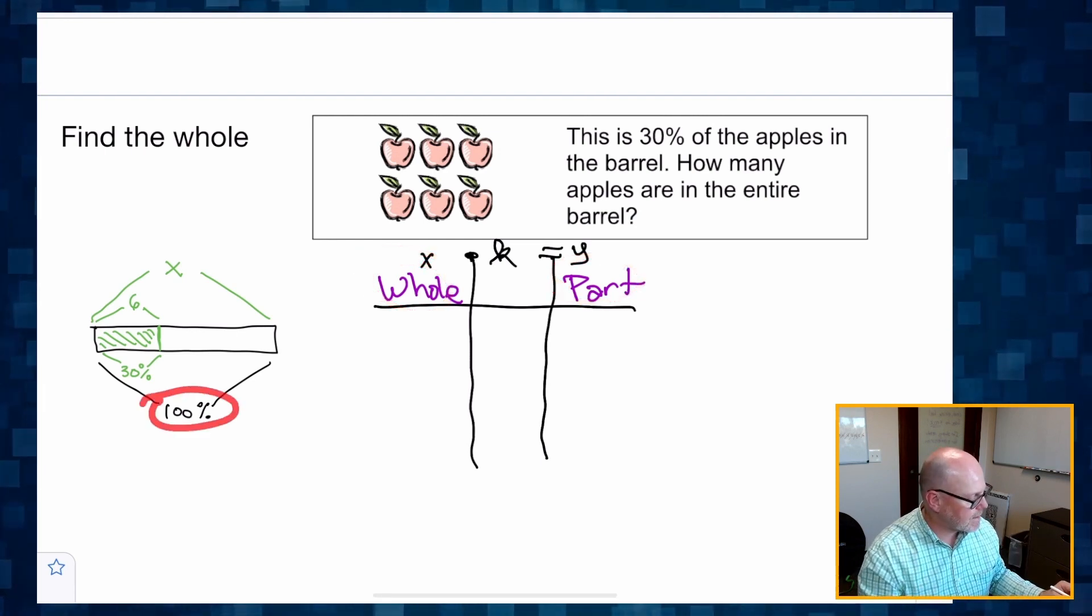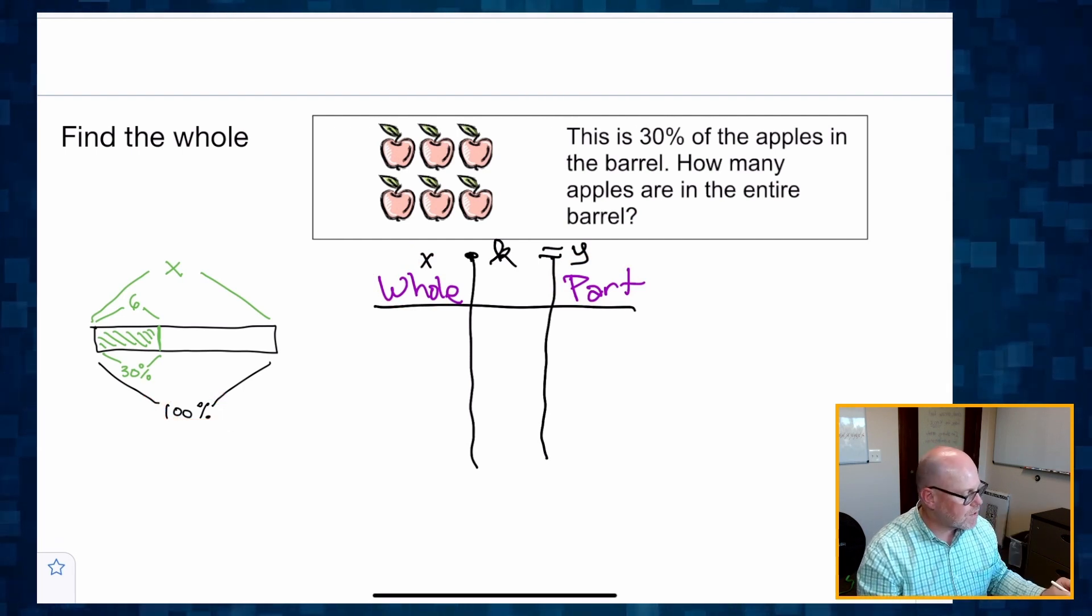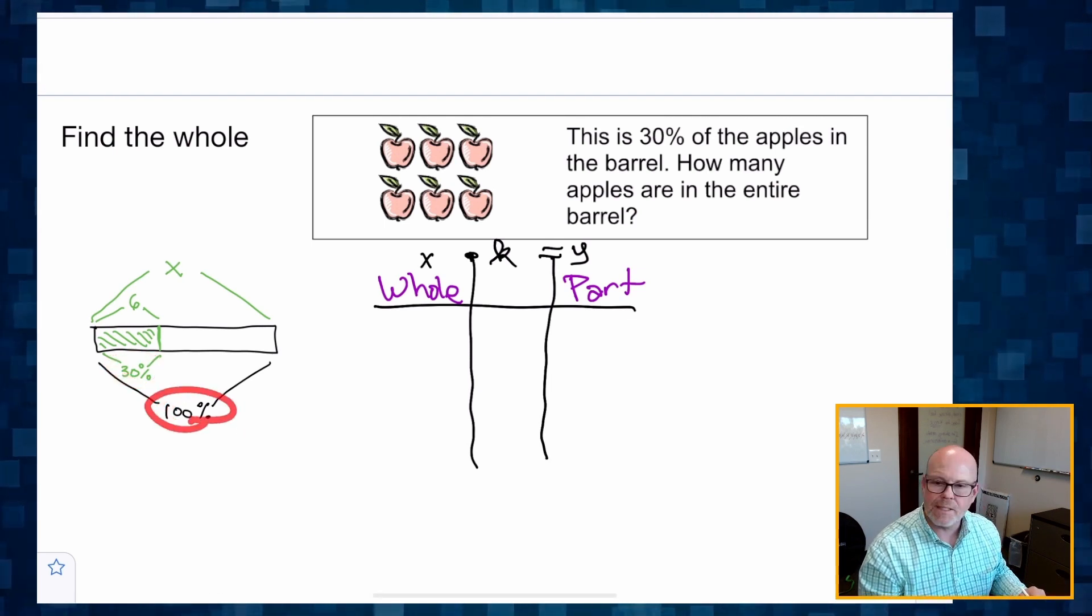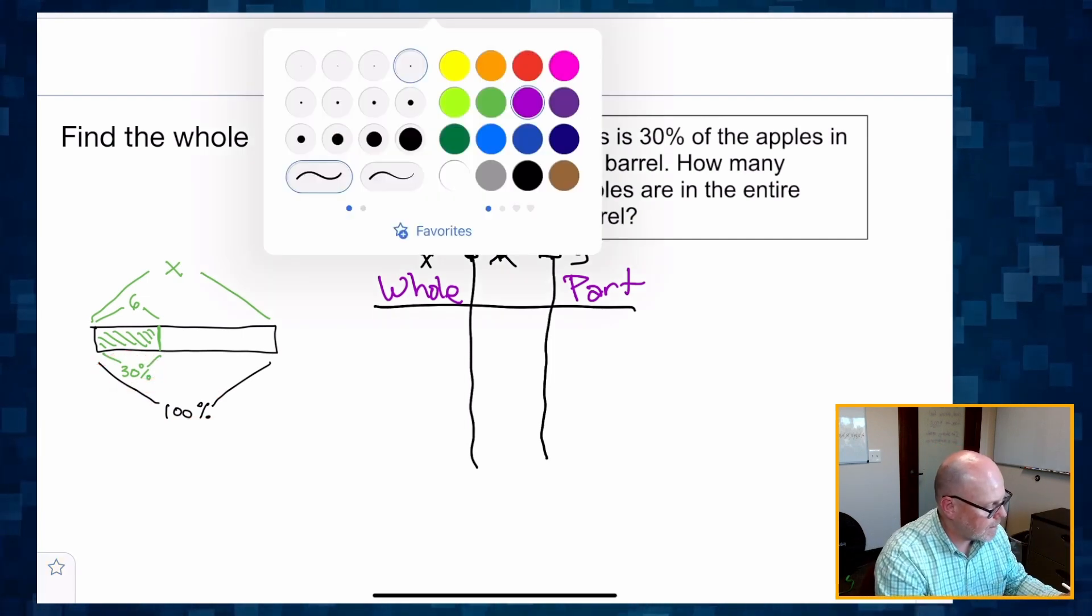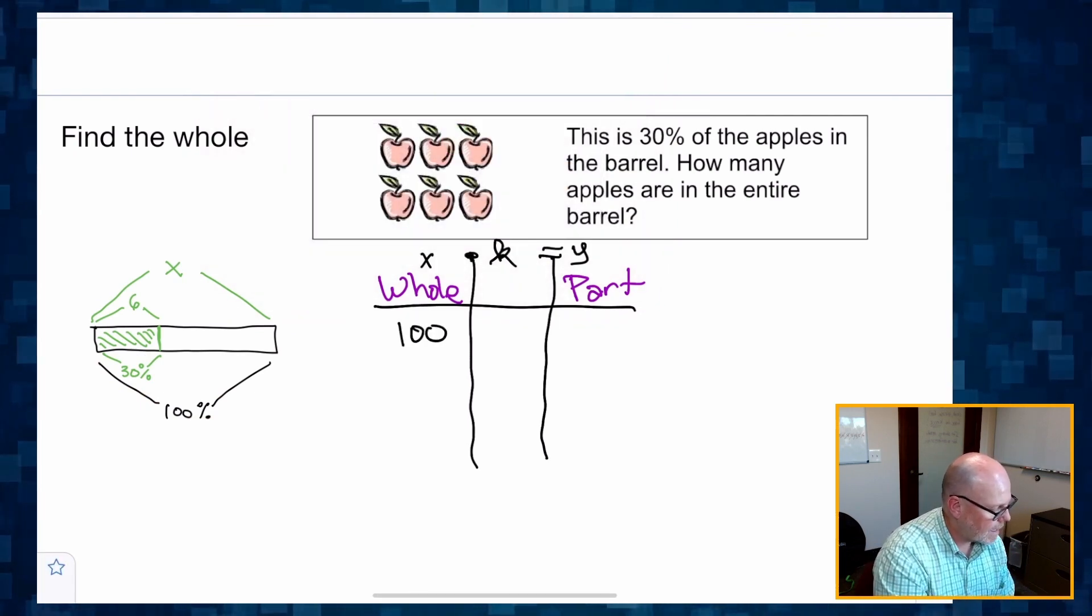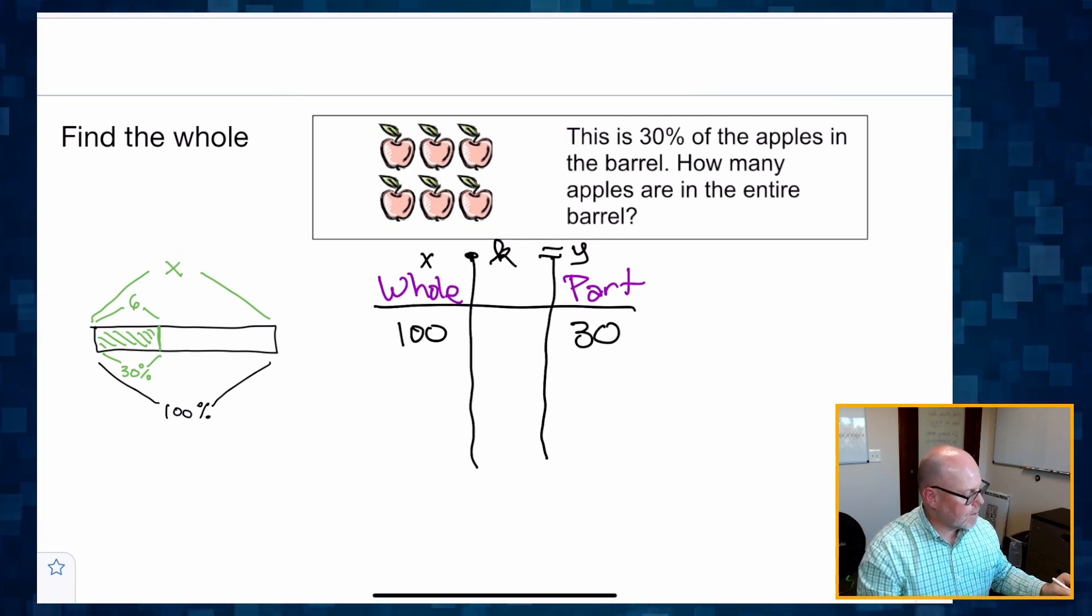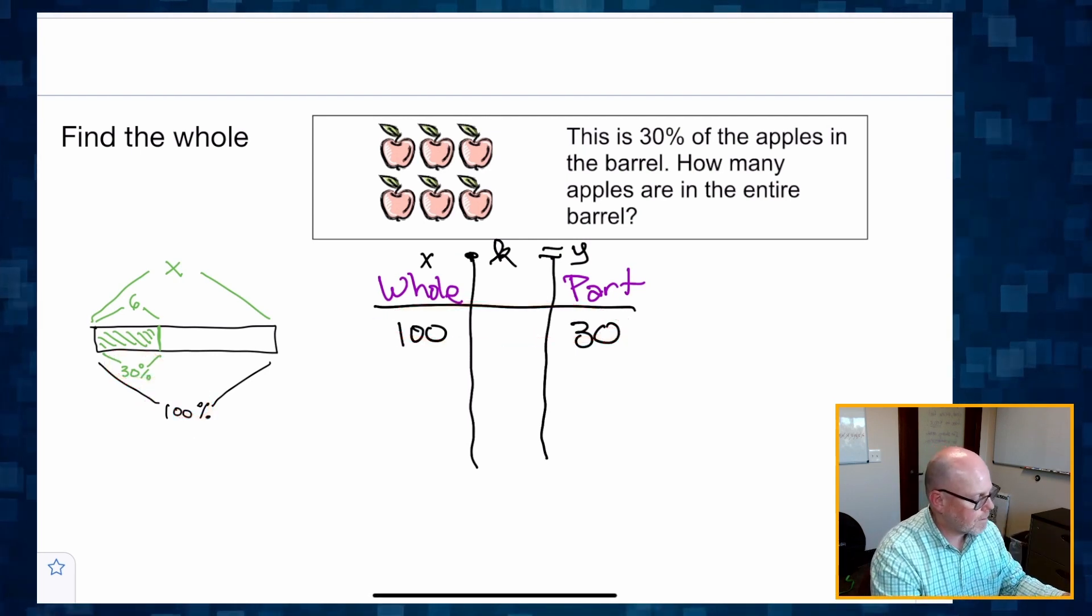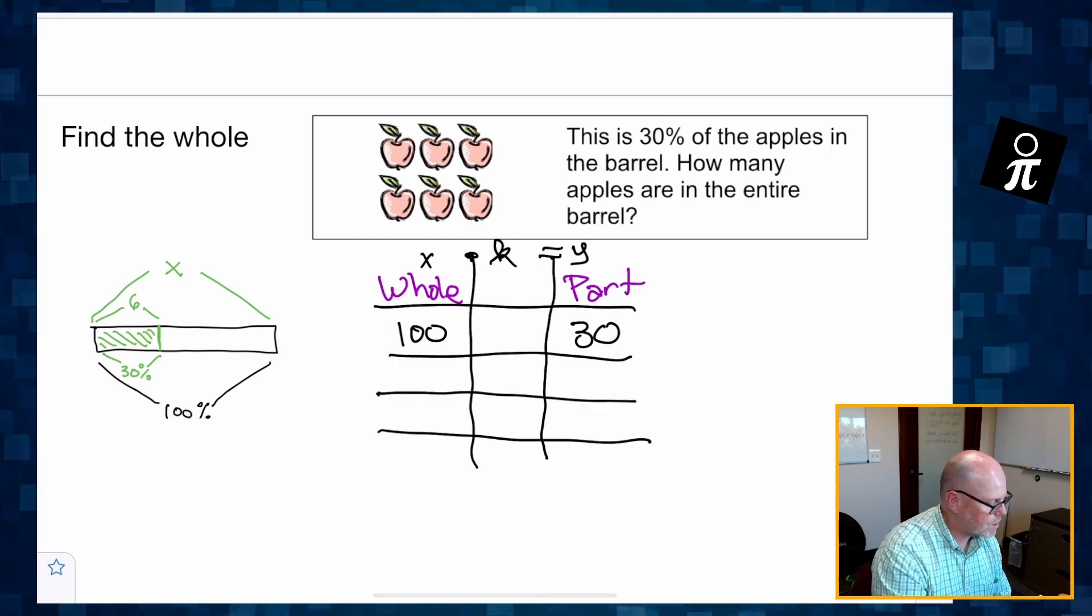For example, I can see that 100% represents a whole and its associated part is the 30%. So 100% and 30% kind of form a ratio. And so I'll fill that in. So 100% and 30% form a ratio because 100% represents the whole and 30 represents its associated part. And then I can create as many rows of equivalent ratios as I want.